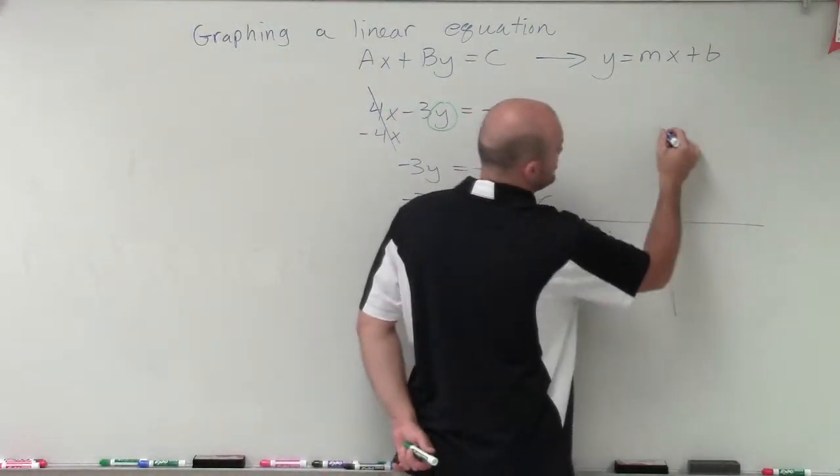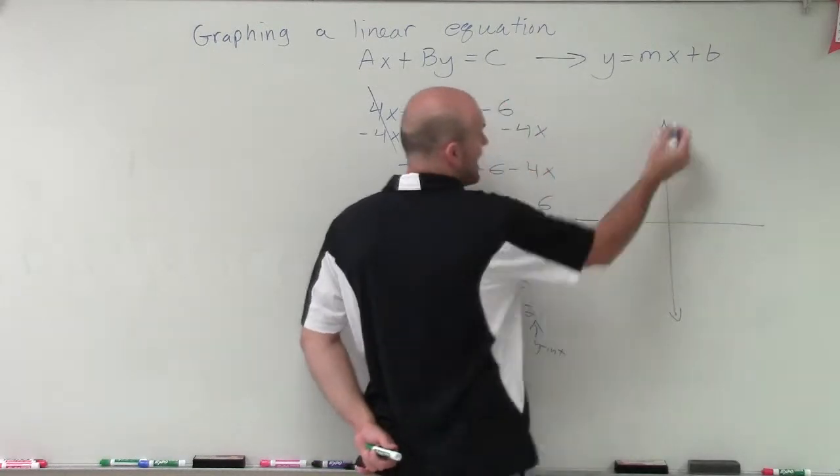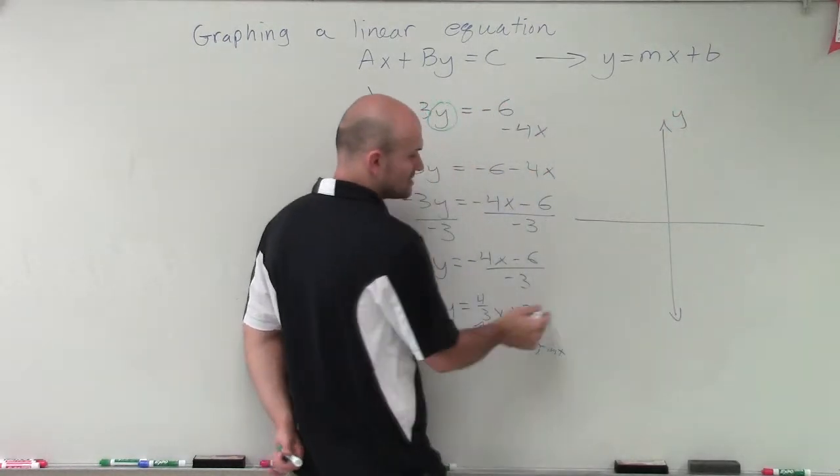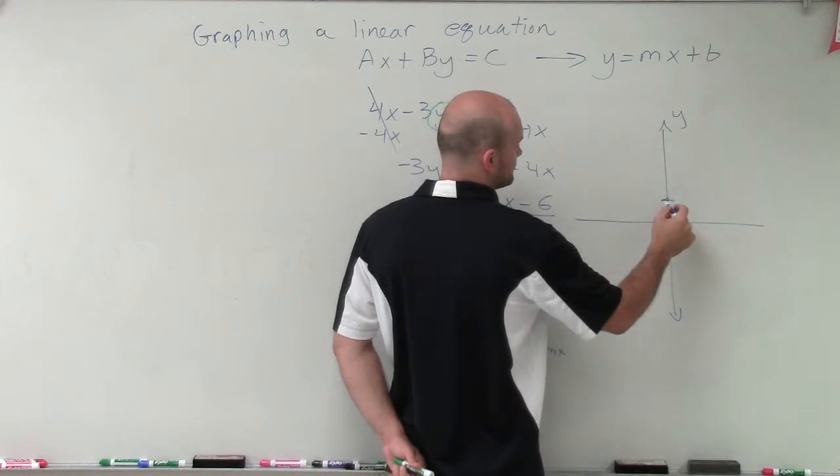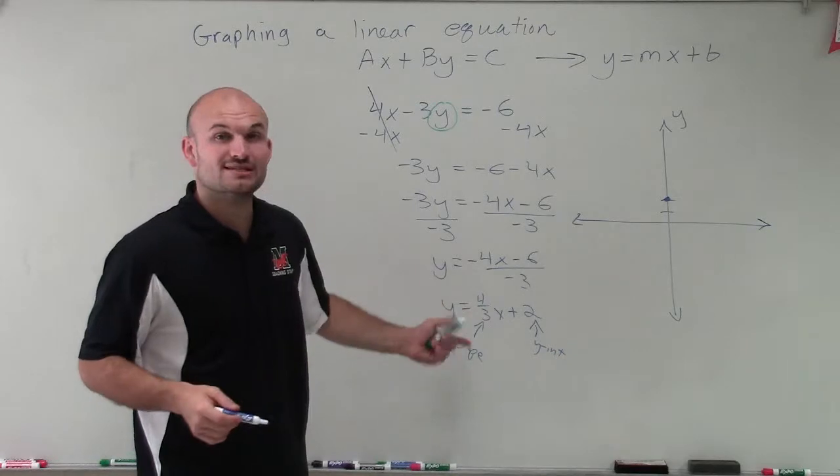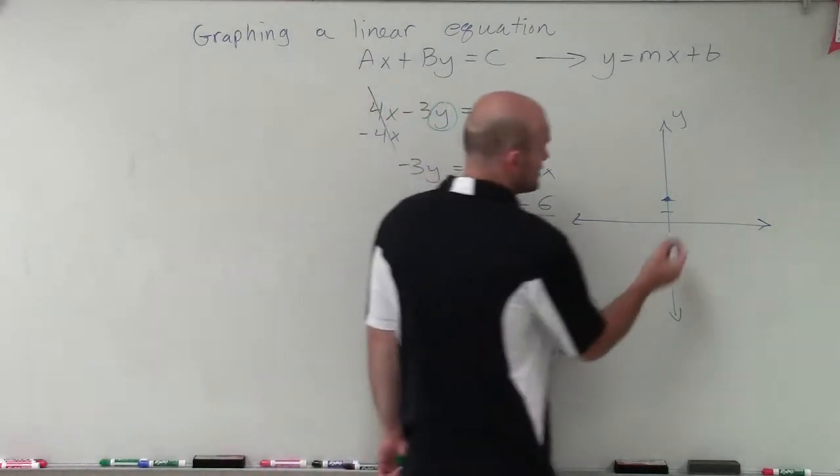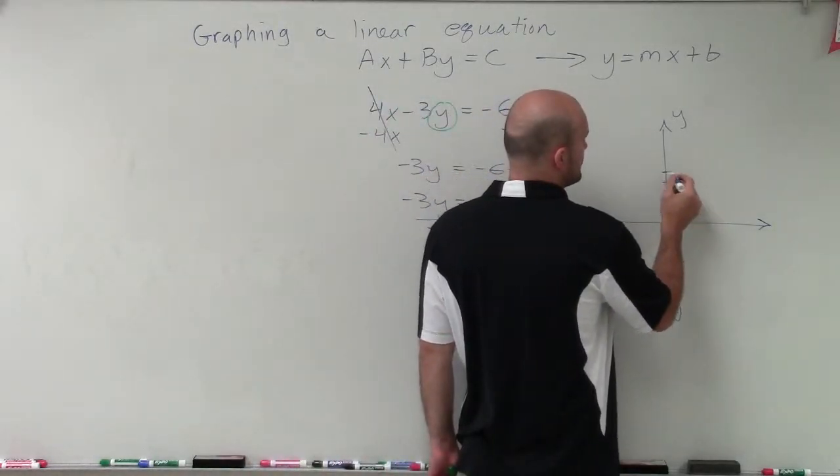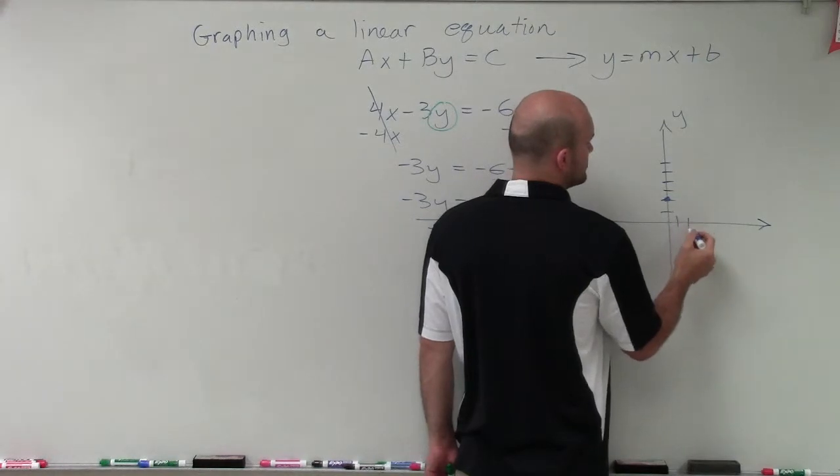Because now all we need to do is plot my y-intercept on my y-axis, which is a positive 2. And then I just need to determine the slope, which is going to take me to my next point, which is 4 3rds. So I'm going to go up 4, 1, 2, 3, 4, and then over 3, 1, 2, 3.